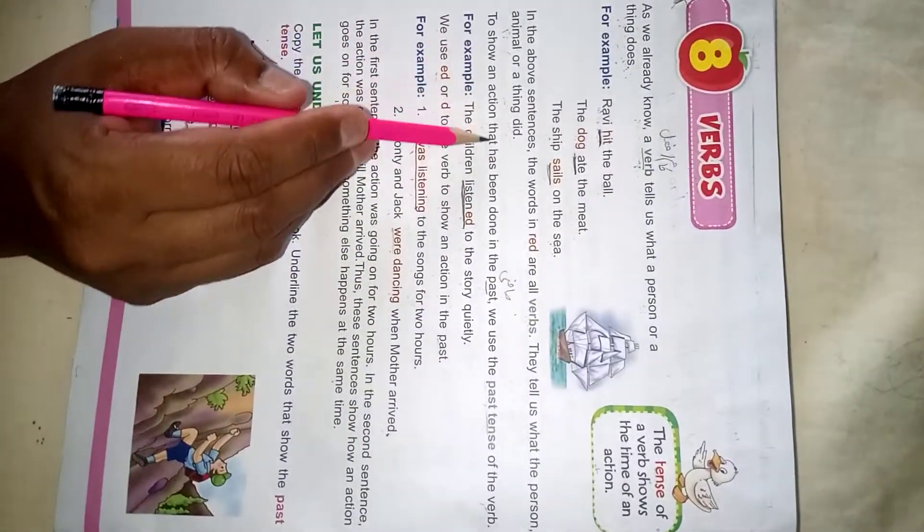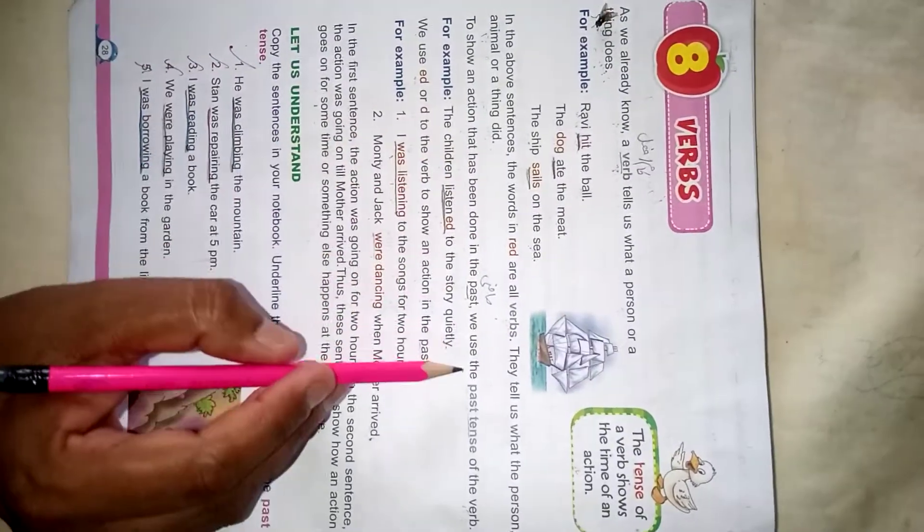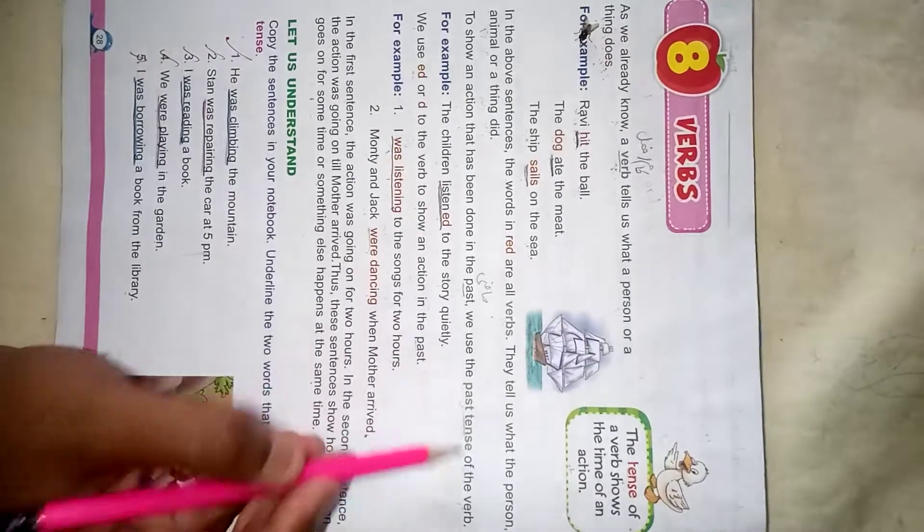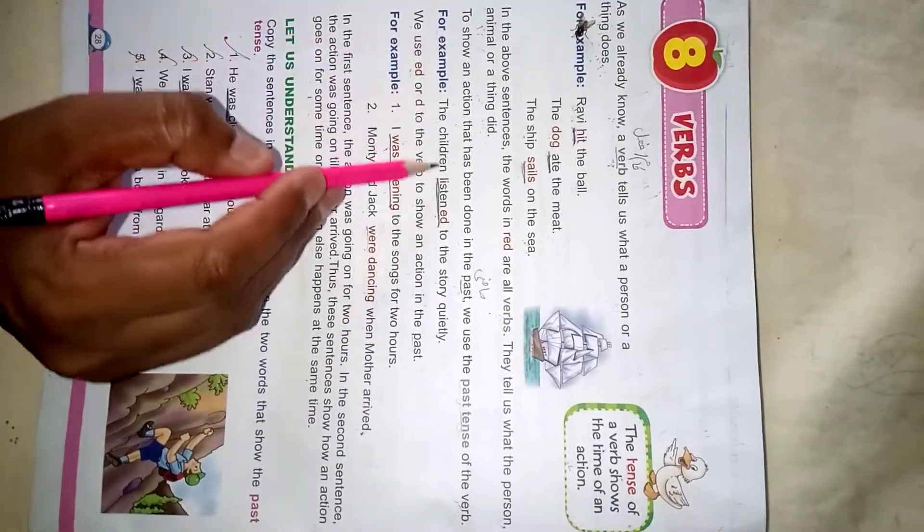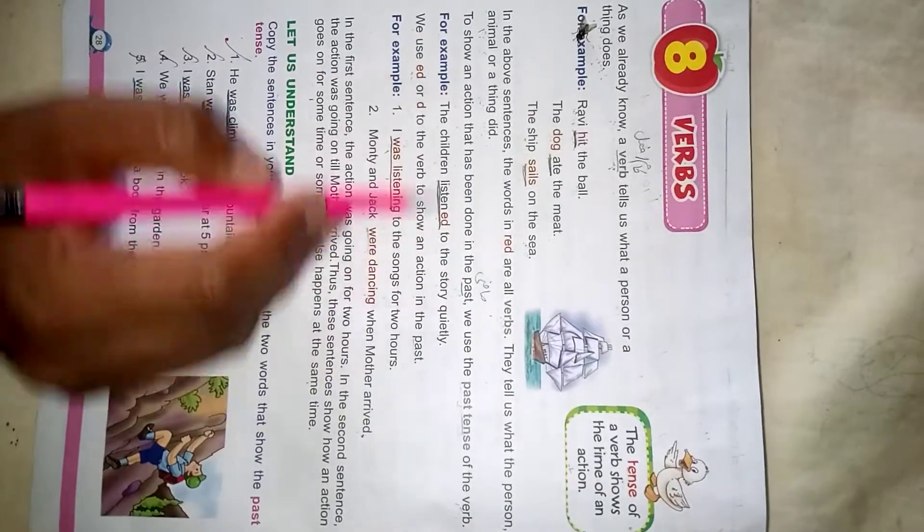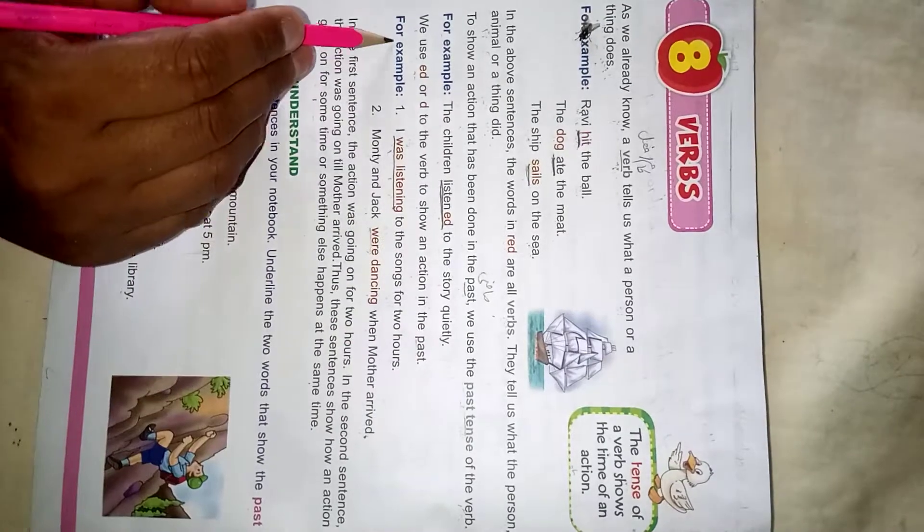To show an action that has been done in the past, we use the past tense of the verb. For example: the children listened to the story quietly. We use -ed or -d with the verb to show an action in the past.